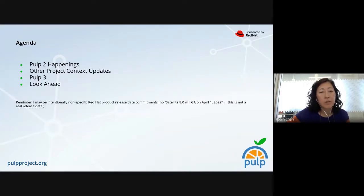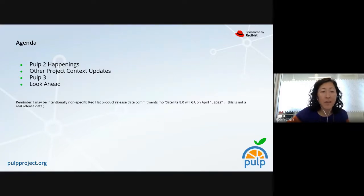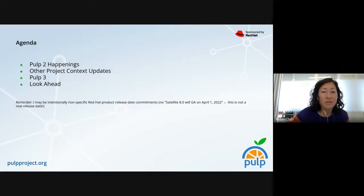Just a note and reminder: I'm going to be intentionally vague about Red Hat product release dates or commitments, because dates are viewed as commitments. So I will not say anything like 'Satellite 8.0 will be GA on April 1st' — that is intentionally not a real date. We are just focused on PULP upstream at this point for the meetup.